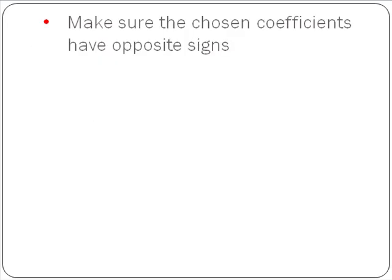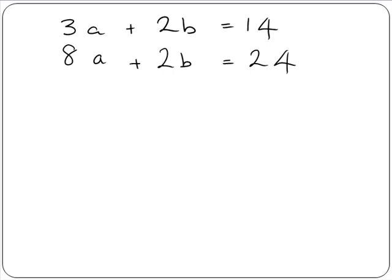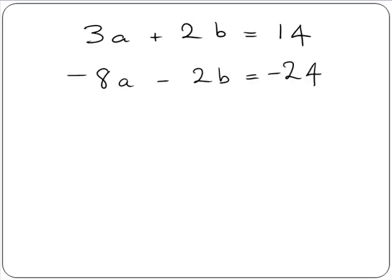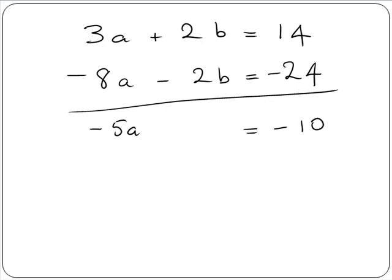Now our second step is to make sure the chosen coefficients have opposite signs. In this case they don't, so we need to multiply one of our equations by minus 1. We multiply the second equation by minus 1: minus 1 times 8a gives us minus 8a, minus 1 times 2b gives us minus 2b, and minus 1 times 24 gives us minus 24. Now we add the two equations together and solve for a: 3a minus 8a gives us minus 5a, plus 2b minus 2b gives us 0, and 14 minus 24 gives us minus 10. We're left with minus 5a equals minus 10.